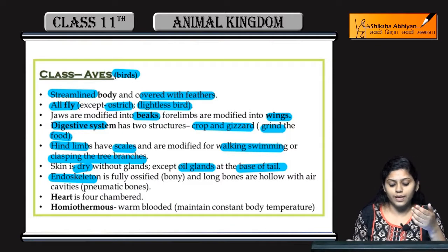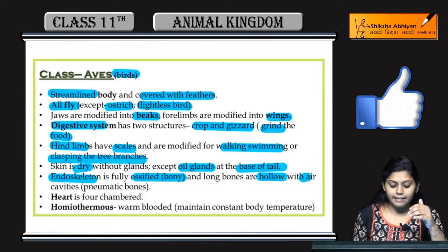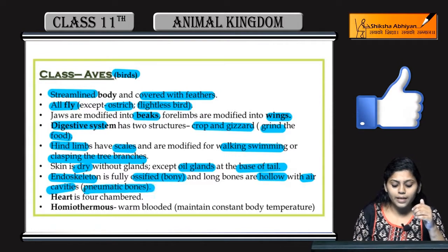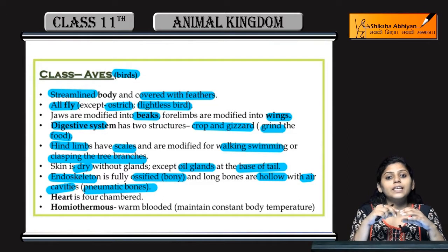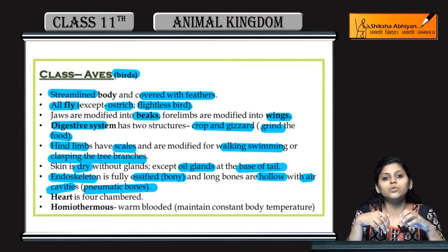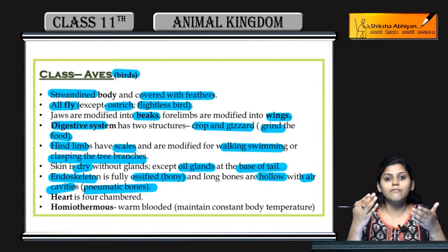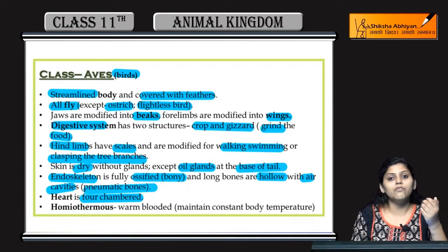Endoskeleton is fully ossified, bony hota hai. Long bones present hoti hai jo ki hollow hoti hai with air cavities — unhye pneumatic bones bolte hai. Woh air cavities se filled hoti hai, means hollow hoti hai, jis ki wajah se unka weight kam hota hai. Birds ka weight kam hone ki wajah se woh easily air pe fly kar sakti hai, gravitational force ke against fly kar sakti hai. Ye help karta hai pneumatic bones. Heart is four-chambered.